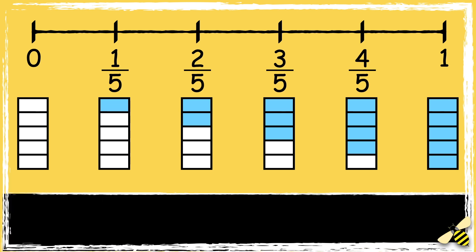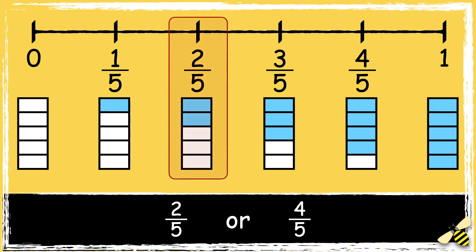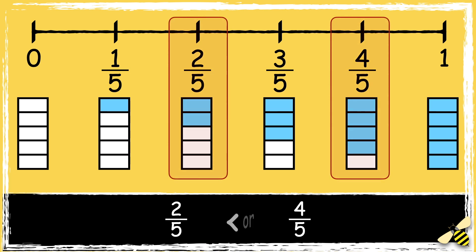Now we're going to use this number line to help us compare some fractions. Which fraction is greater, 2 fifths or 4 fifths? You can see that on the number line, 2 fifths comes before 4 fifths. So 2 fifths is less than 4 fifths.